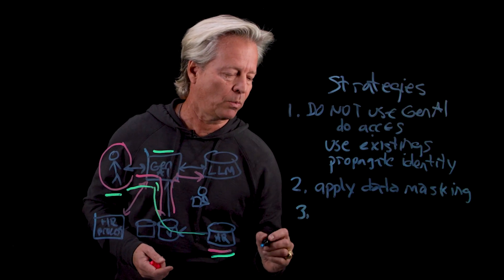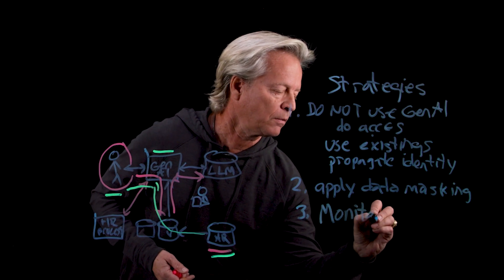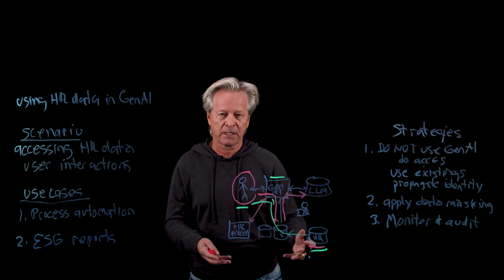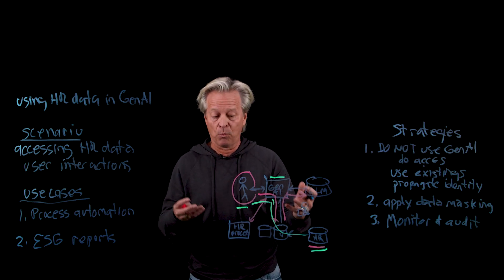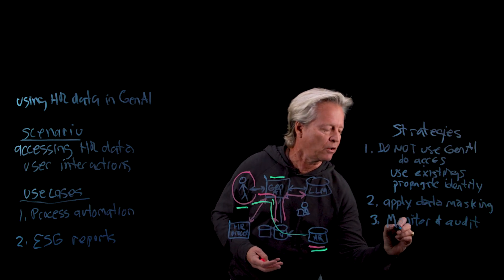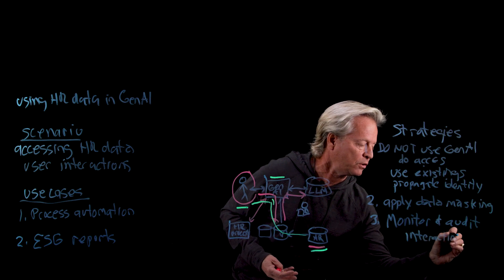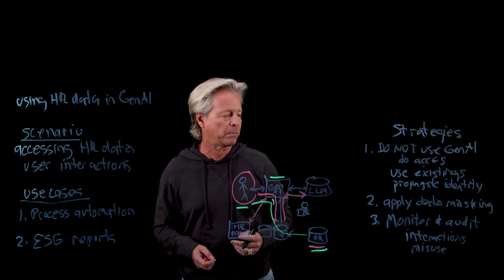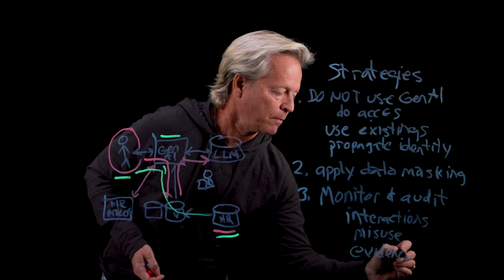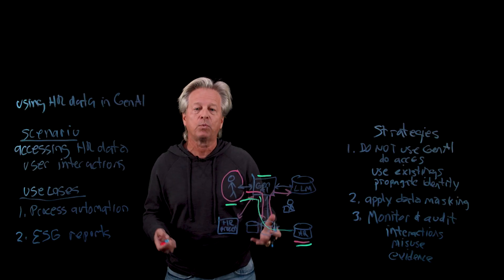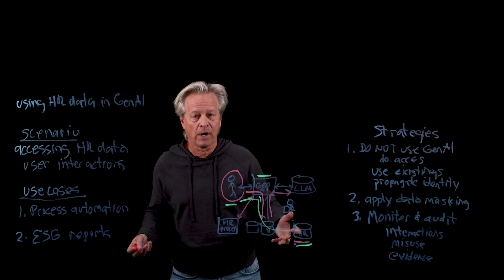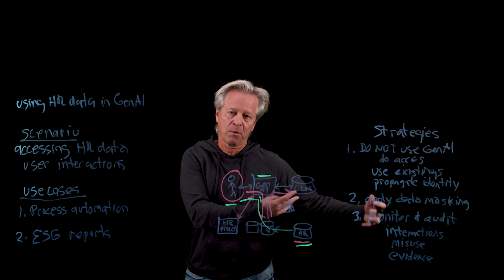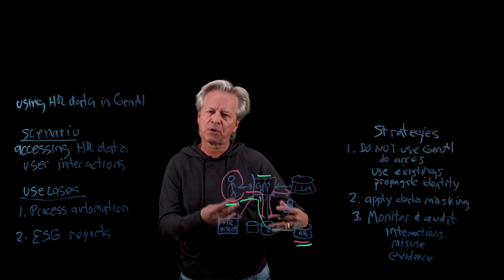The third strategy is to make sure we are always monitoring and available for audit. Now that users are really interacting with systems and with data of a very sensitive nature, and integrating with processes, we want to always be watching and understanding the interactions happening between the user and the system. We want to look for misuse, make sure the system isn't being used in unexpected ways, and store evidence of all these interactions so we can go back and audit what's happening. This monitoring can also be used to look at system behaviors and feed that back to retrain and re-fine-tune our models.